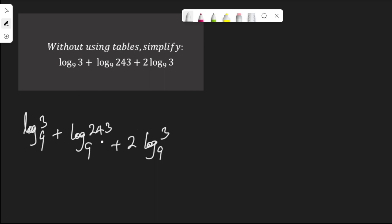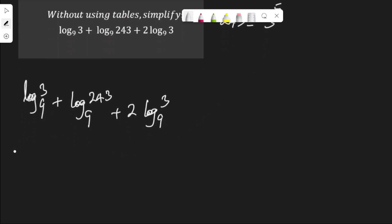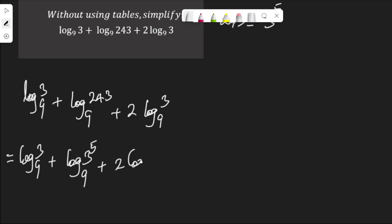Let's start with the middle term. Now this 243 — write it in this form: 243 is 3 to the power of 5. That means the expression becomes log 3 to base 9 plus log 3 to the power of 5 to base 9 plus 2 log 3 to base 9.